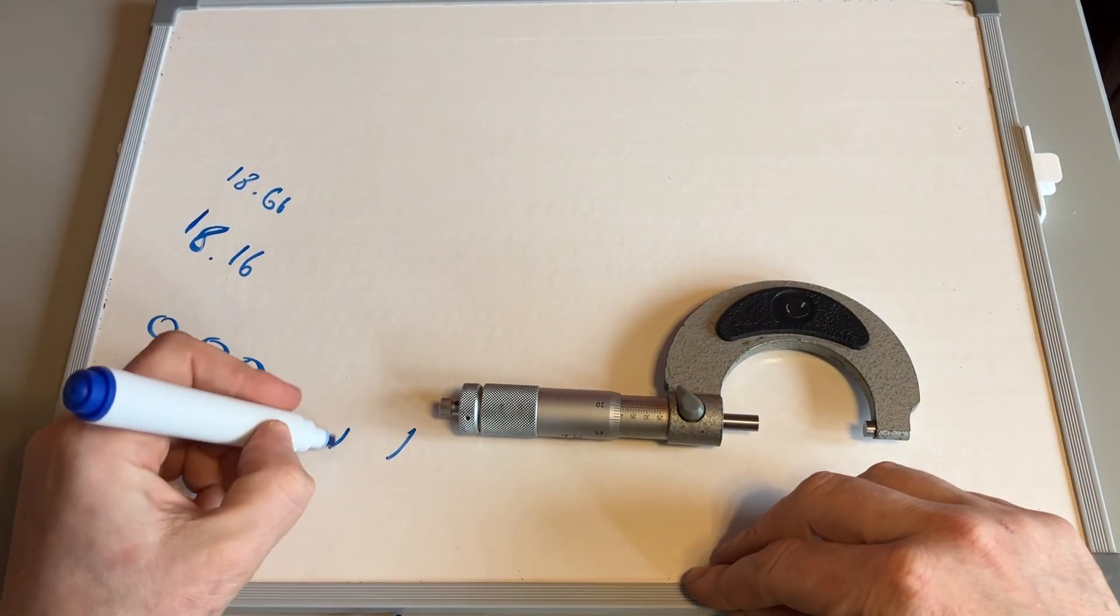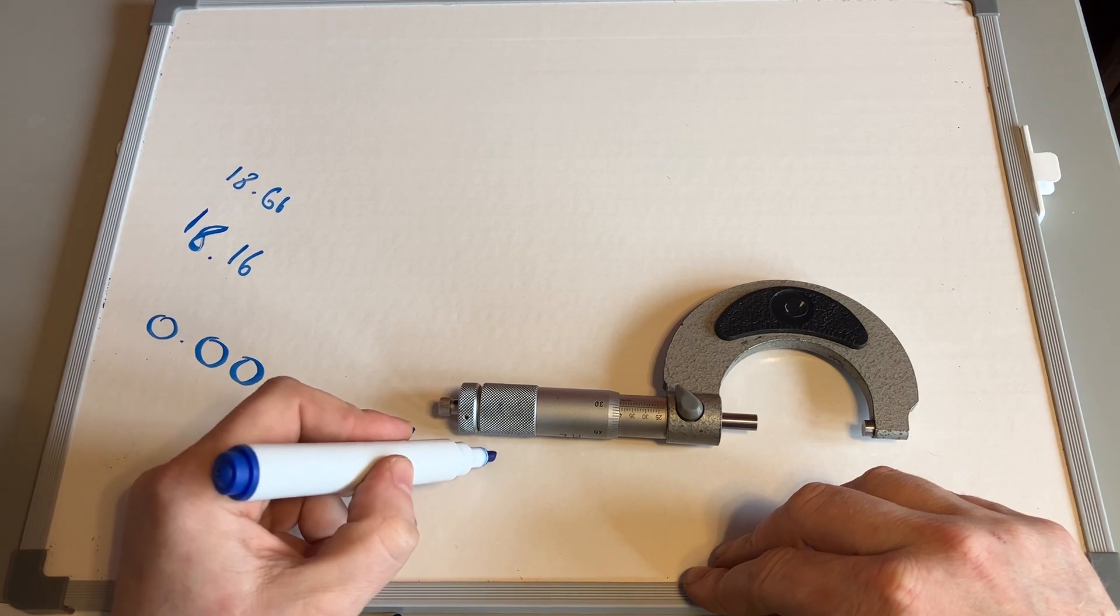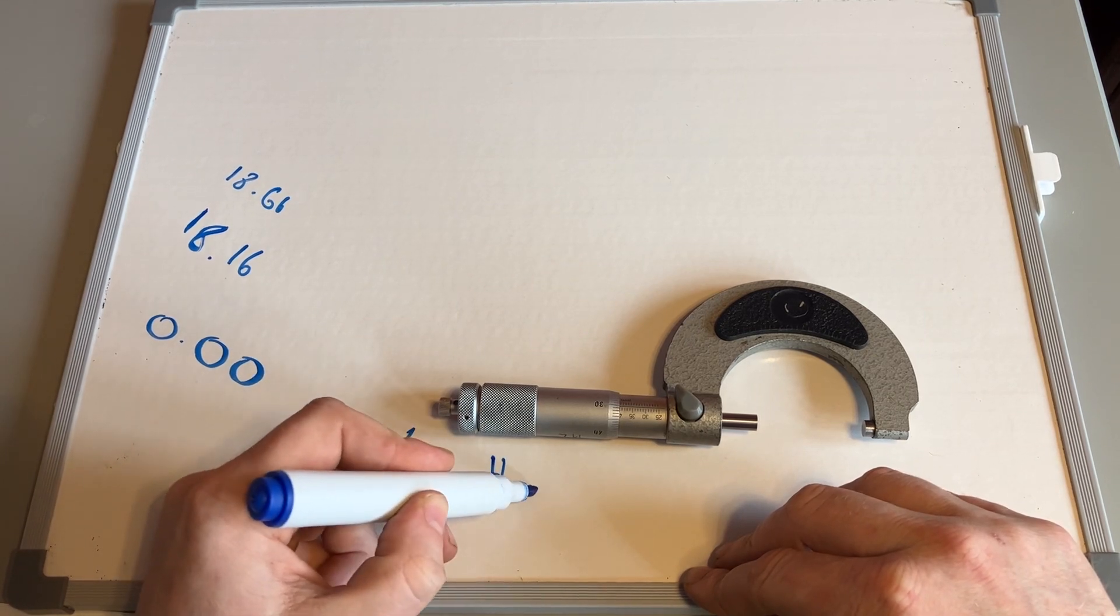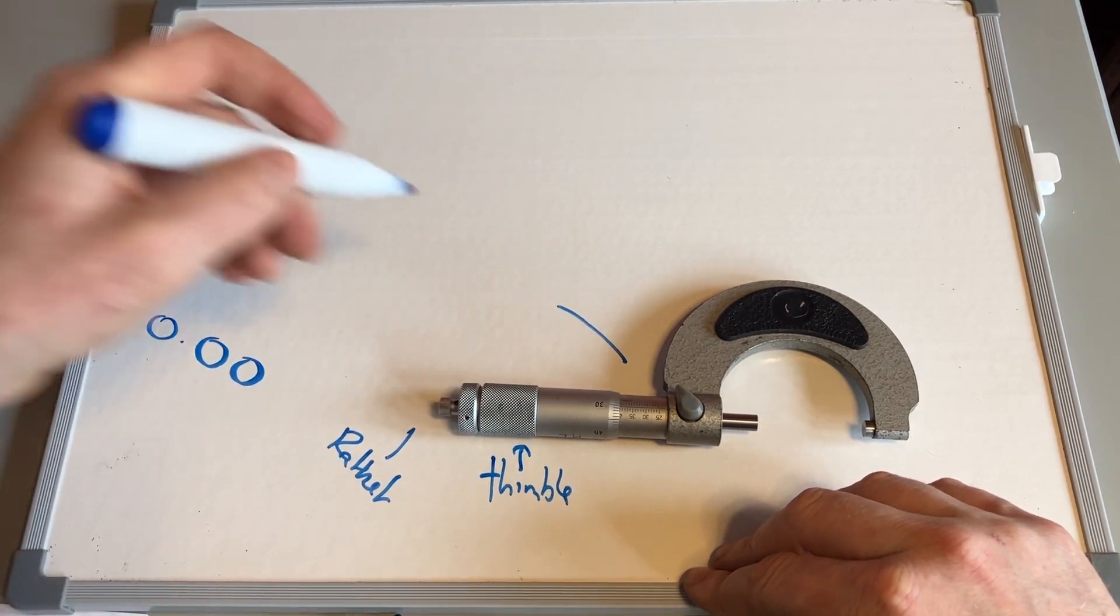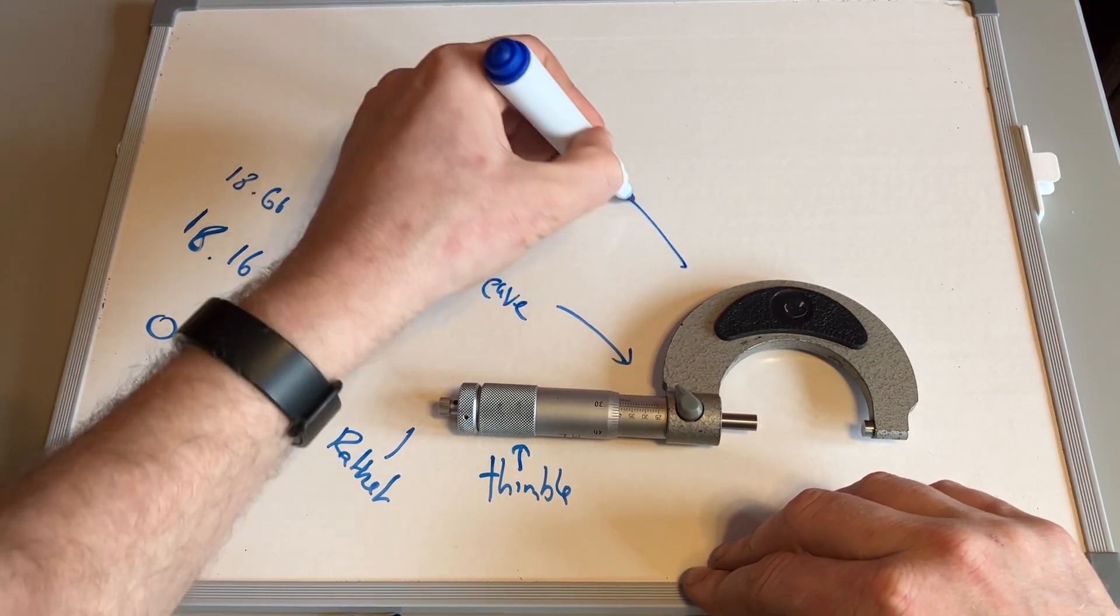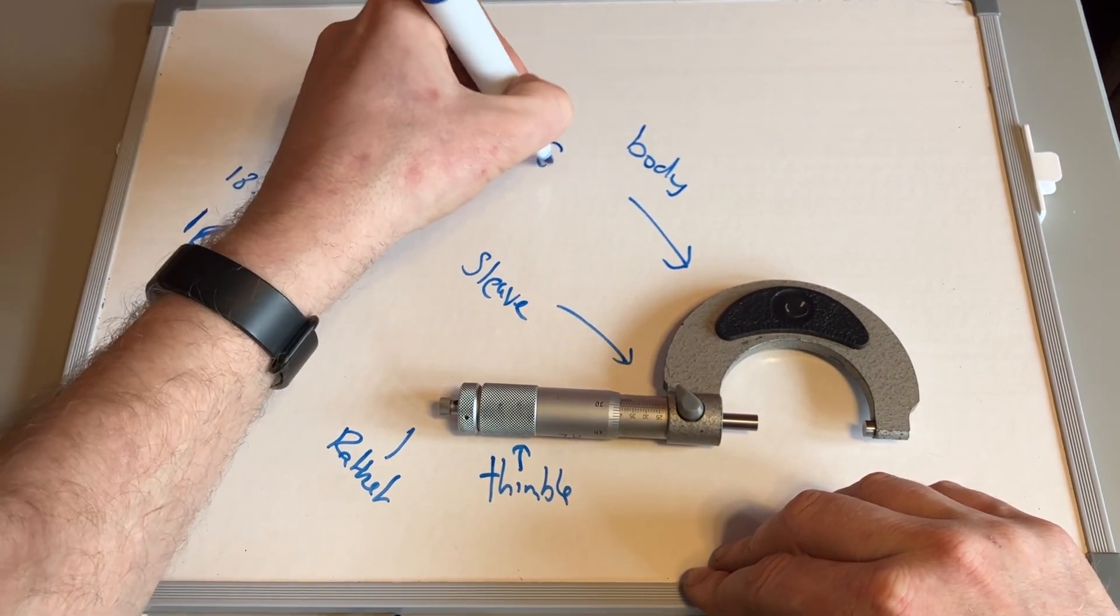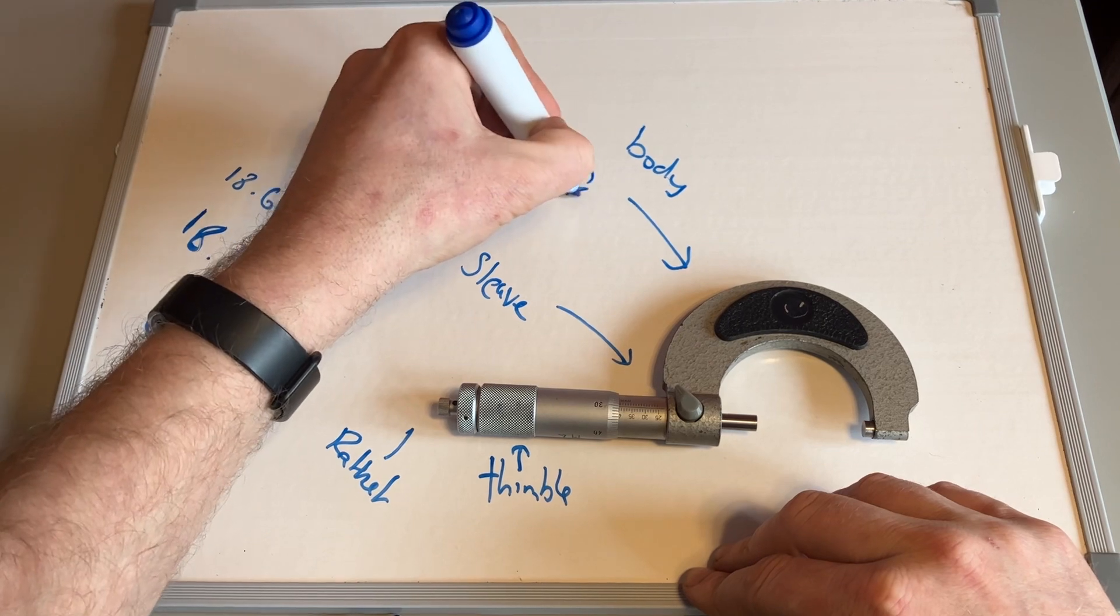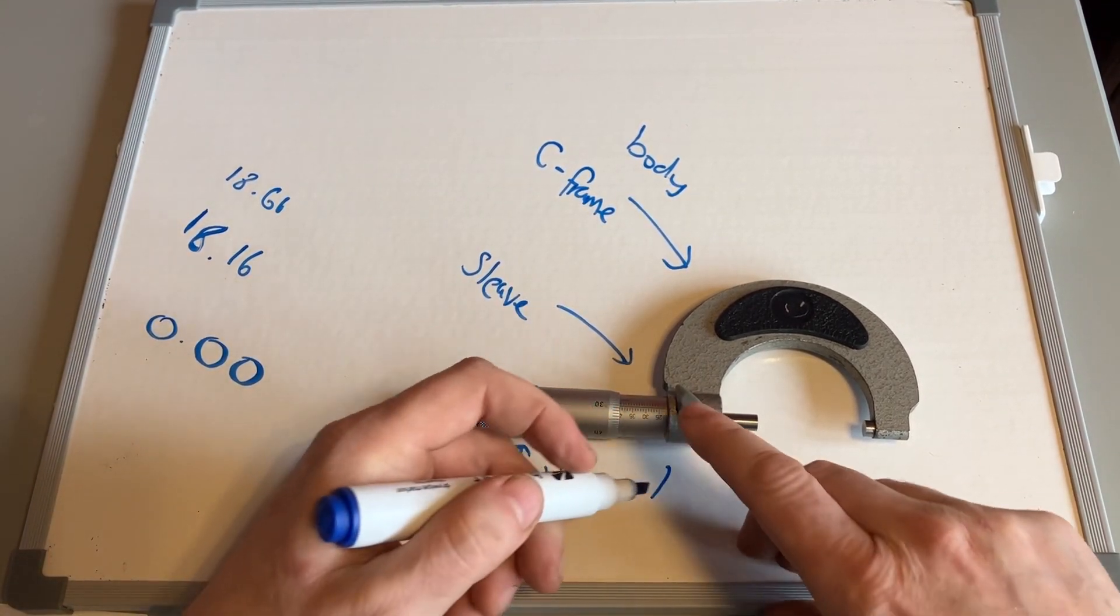We've got the ratchet, we've got the thimble, the sleeve here, the body, sometimes called a C frame, obviously because of its shape. We've got the lock nut, this little section here.